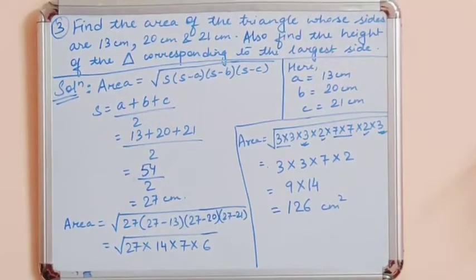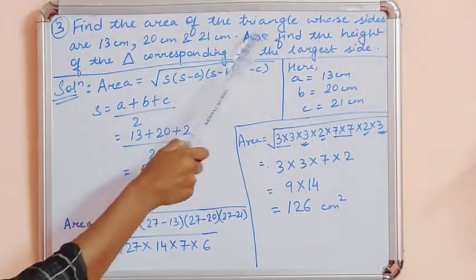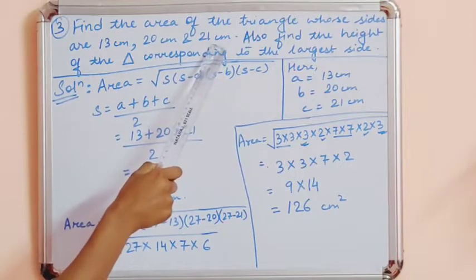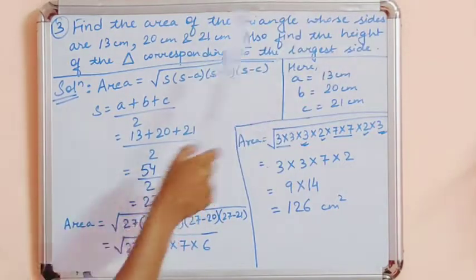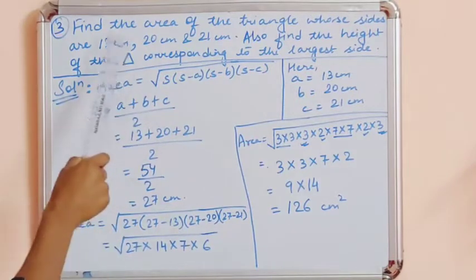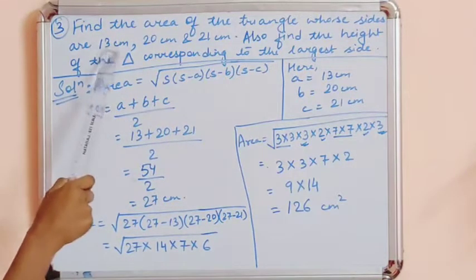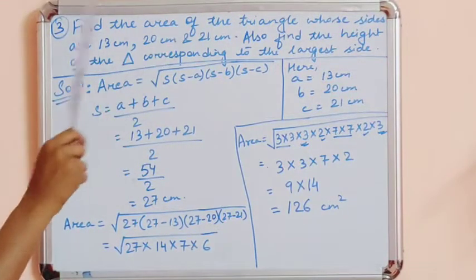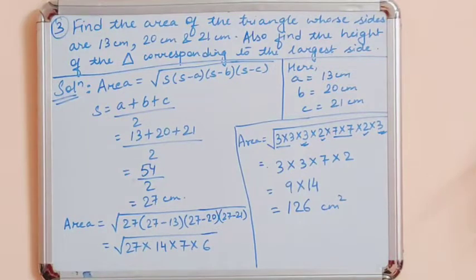Now look at the third question: find the area of the triangle whose sides are 13 cm, 20 cm, and 21 cm. Also find the height corresponding to the largest side. Here, the three sides are given but base and height are not. We can't use the formula area equals half into base into height, so instead we will use Heron's formula.